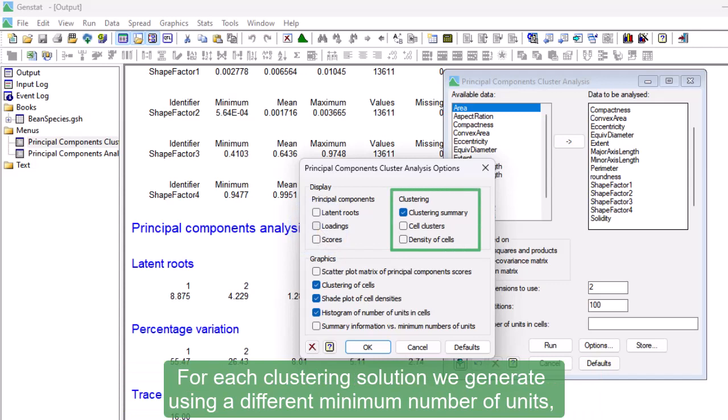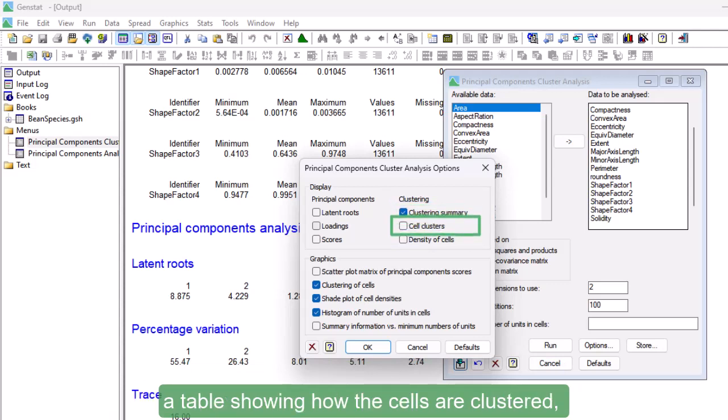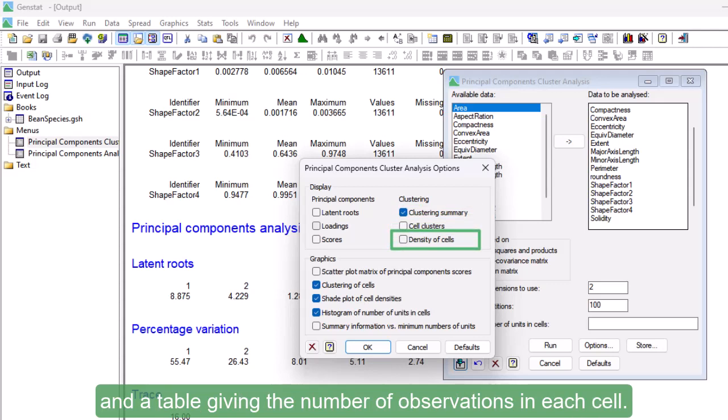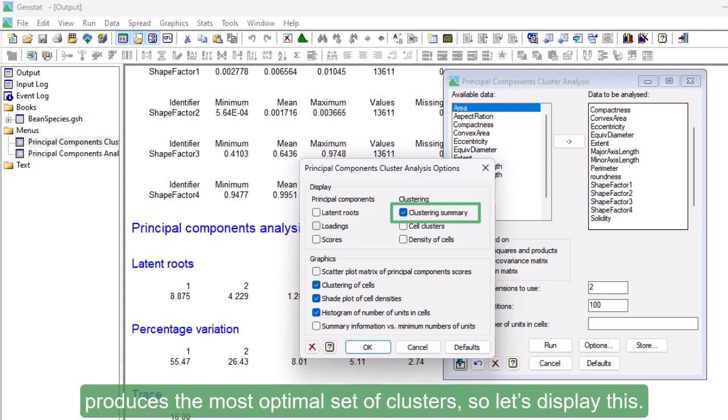For each clustering solution we generate using a different minimum number of units, we can display summary information about the clustering, a table showing how the cells are clustered, and a table giving the number of observations in each cell. The summary information is helpful for assessing which value for the minimum number of units produces the most optimal set of clusters, so let's display this.